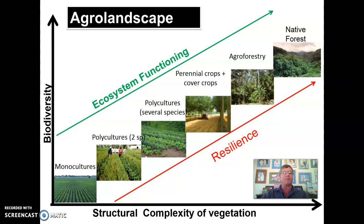That is why it is important to try and increase the biodiversity of an agro ecosystem, which will automatically improve the resilience of the system and improve ecosystem functioning.